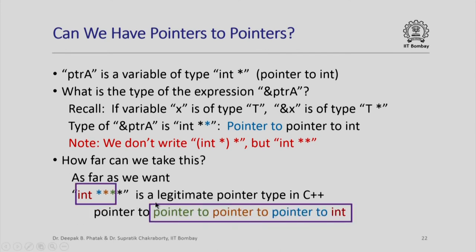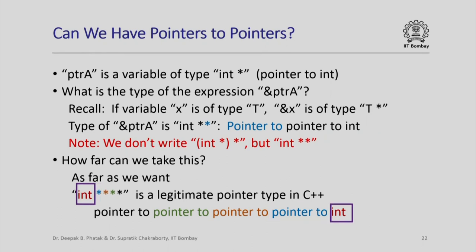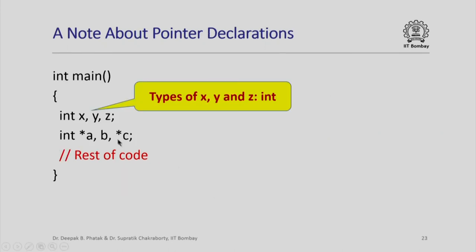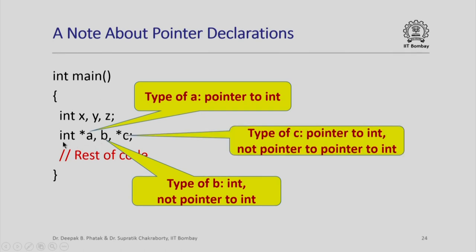Here is a brief note about pointer declarations. A declaration like int x, y, z assigns the type int to all of x, y, and z. However, a declaration like int* A, B, **C does not make all three pointer types. In C++, A has type int*, B has just type int, and C has type int* — not int**. So you should be careful when declaring pointer variables, and declare each pointer variable separately to avoid confusion.